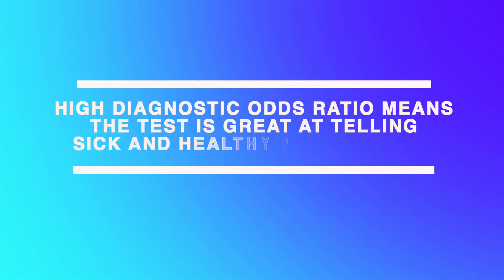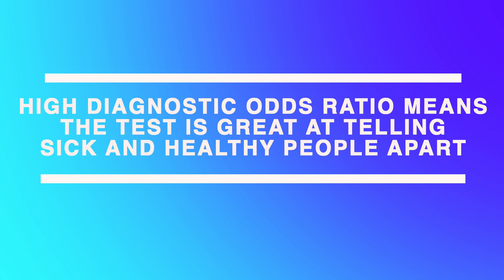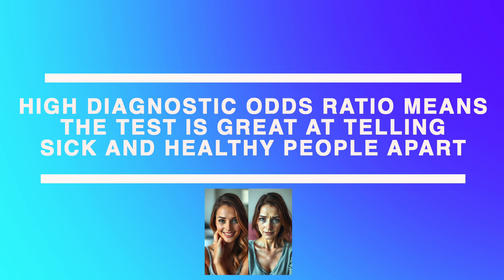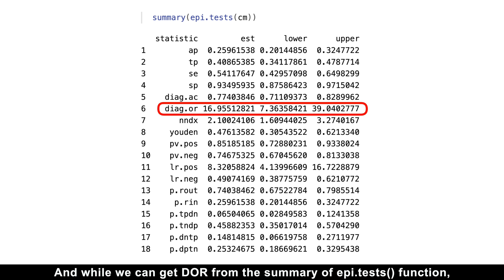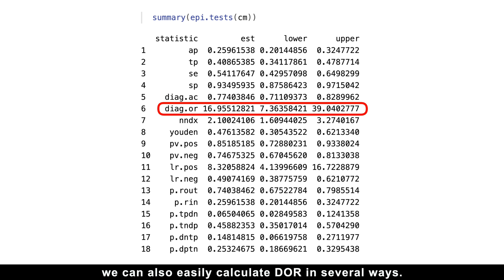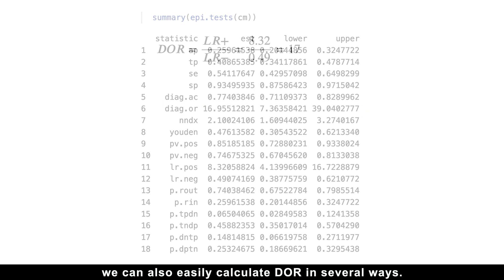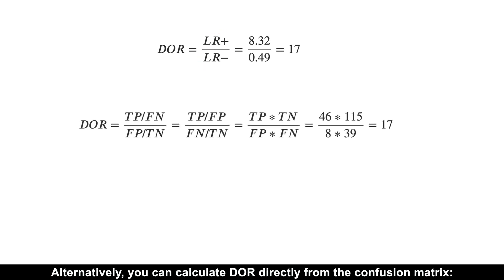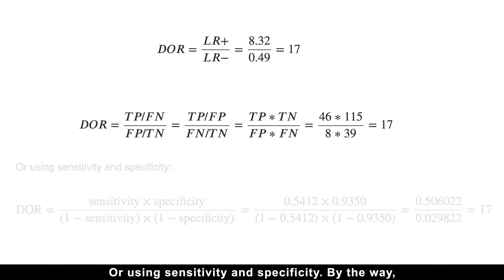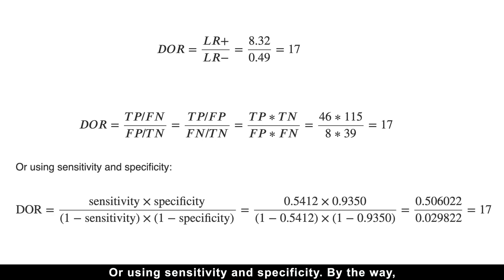A high diagnostic odds ratio means the test is great at telling sick and healthy people apart. While we can get it from the summary of the epi.tests function, we can also calculate it in several ways. The simplest is dividing the positive likelihood ratio by the negative likelihood ratio. Alternatively, you can calculate it directly from the confusion matrix or using sensitivity and specificity.